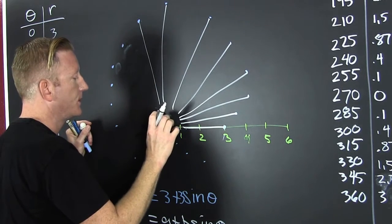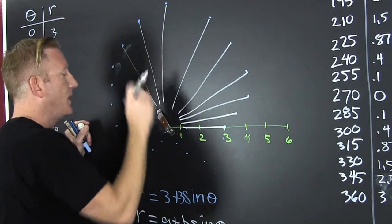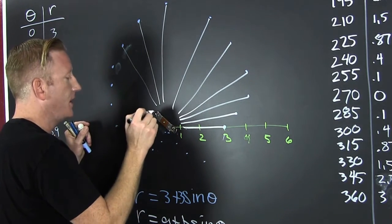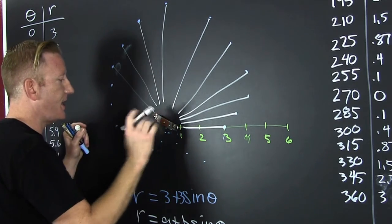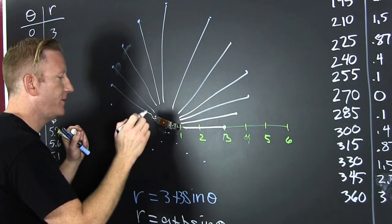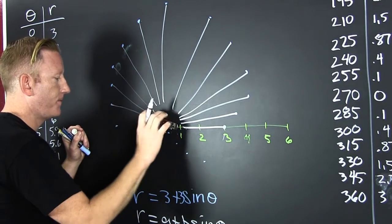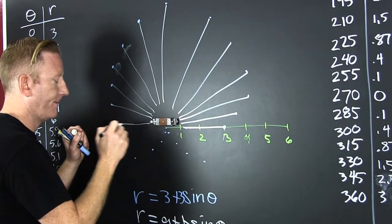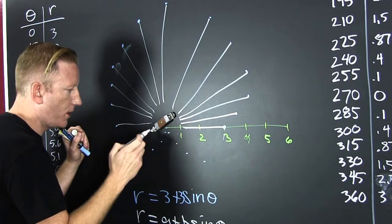Boom. And we go around and we keep going out as far as they say. And then we have a cardioid.